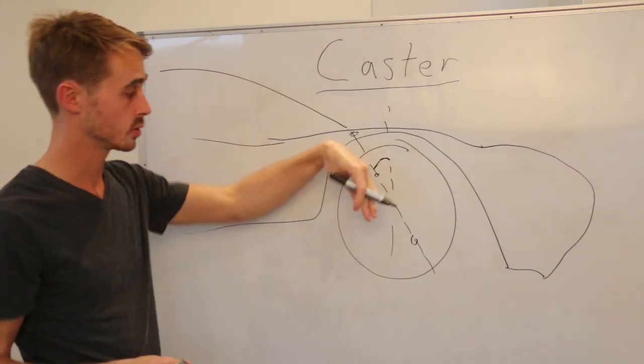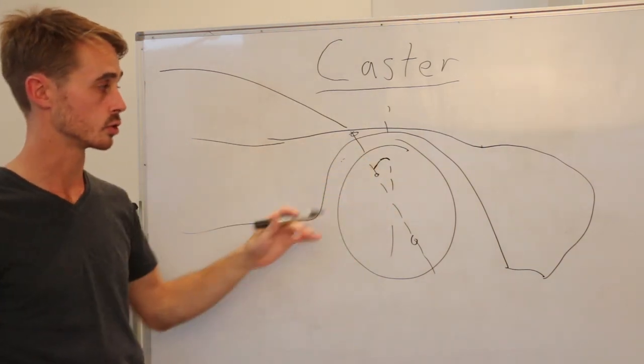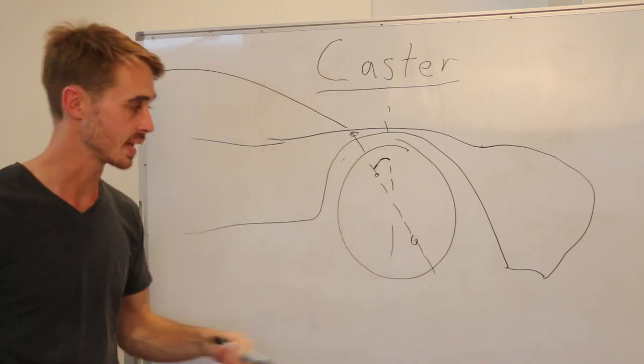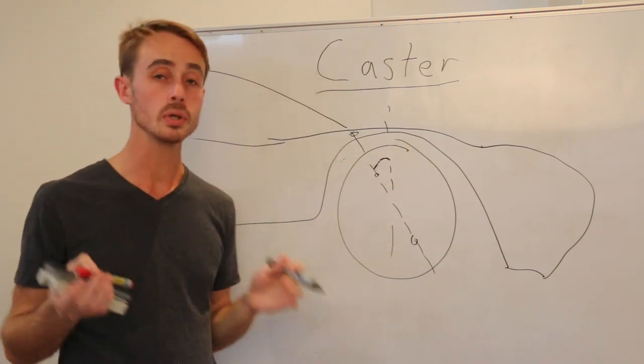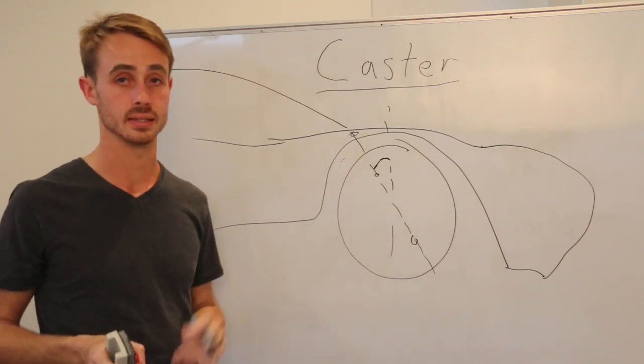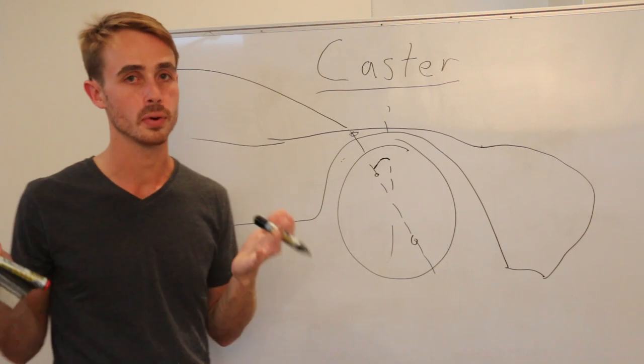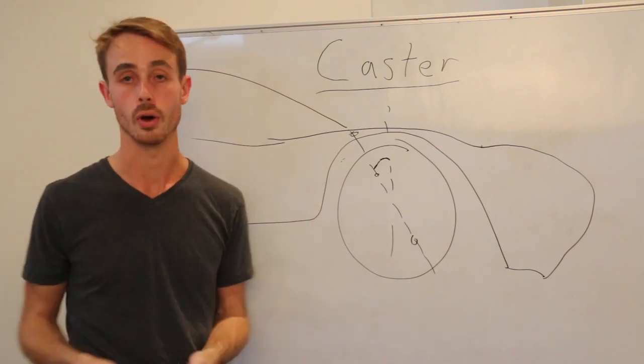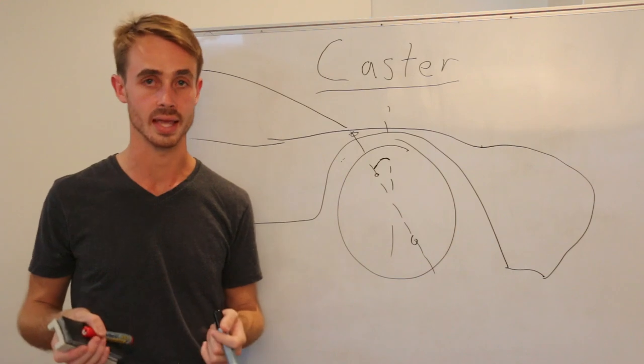Now as far as sign convention goes, this direction here is known as positive caster and the other way is known as negative caster. Almost every car you'll find will have positive caster to some degrees. Common numbers are from around 3 to 6 degrees for a road car although obviously there are outliers to this more and less.